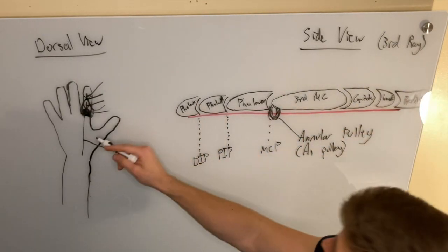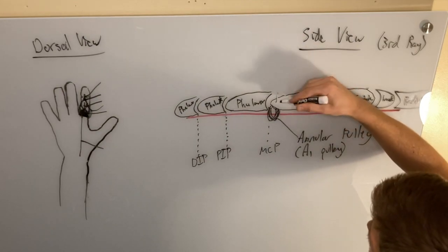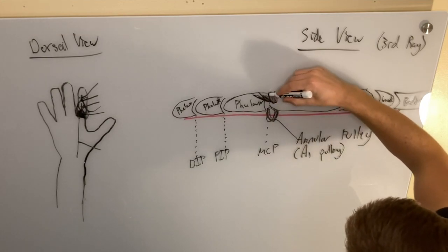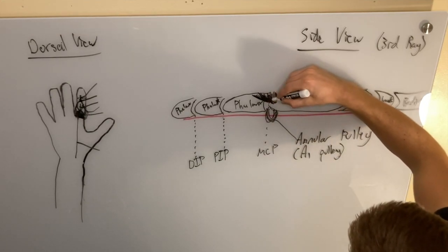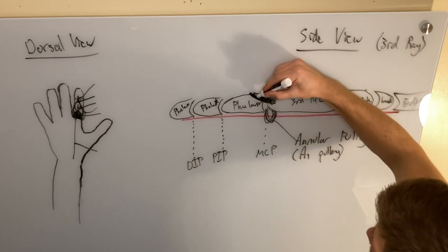So now we're going to add in what we have over here. So right over the MCP joint, we have the transverse fibers and the oblique fibers of the dorsal hood. And that's wrapping around the other side.